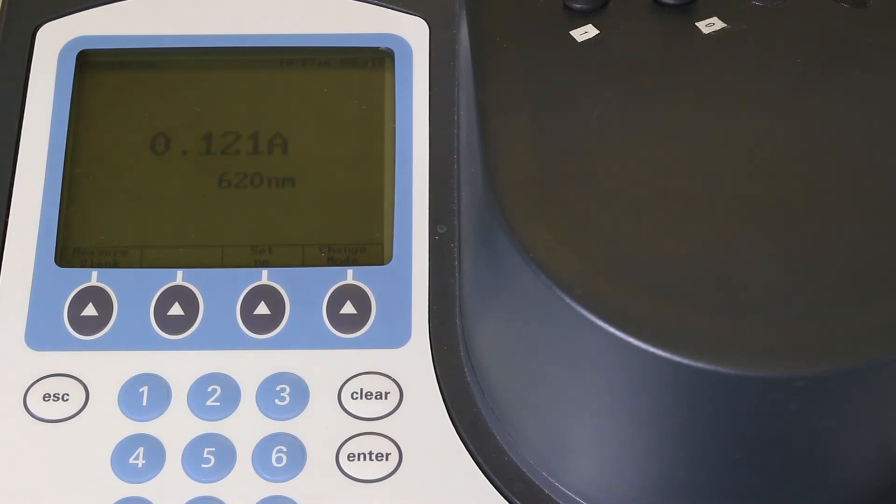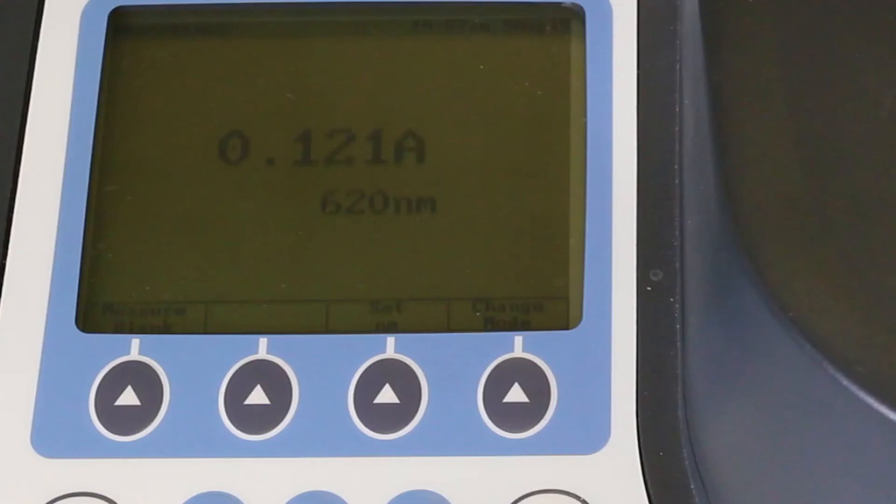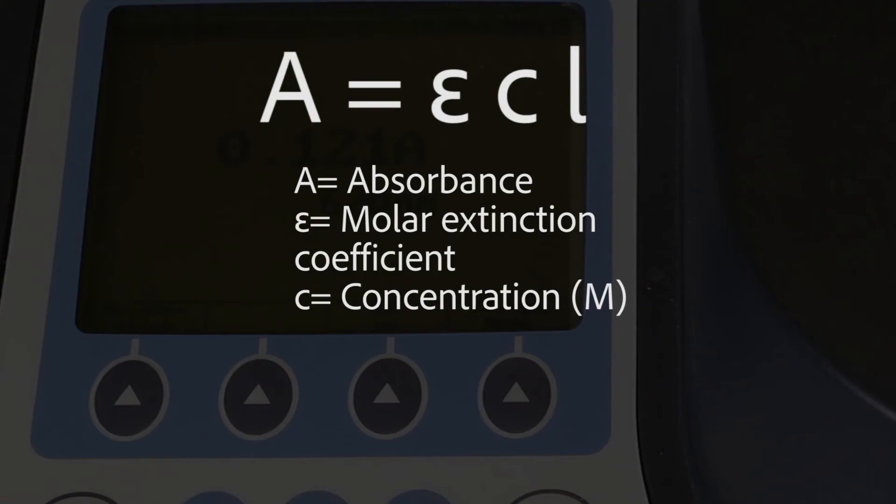Also remember that the information provided by this machine is not usually the end of the practical experiment. You will often need to interpret the data in the light of the Beer-Lambert law.